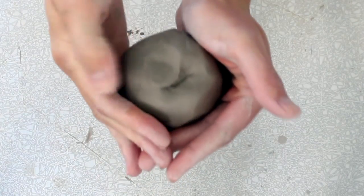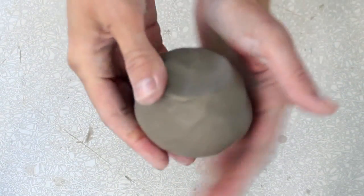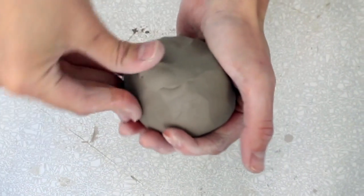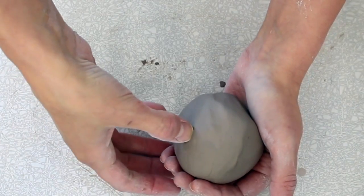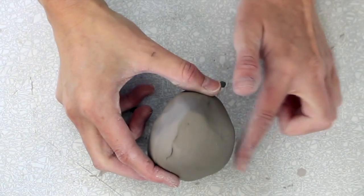Once I've kind of hit this into a ball shape, if there are any crevices you want to smooth those out because that's going to really help as you create your pinch pot. If you don't do this you'll kind of get cracks throughout your pot.